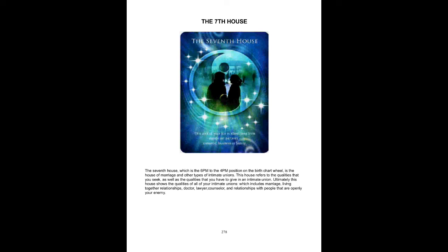The seventh house, which is the 6 p.m. to the 4 p.m. position on the birth chart wheel, is the house of marriage and other types of intimate unions. This house refers to the qualities that you seek as well as the qualities that you have to give in an intimate union. Ultimately, this house shows the qualities of all of your intimate unions, which includes marriage, living together relationships, doctor, lawyer, counsellor, and relationships with people that are openly your enemy.